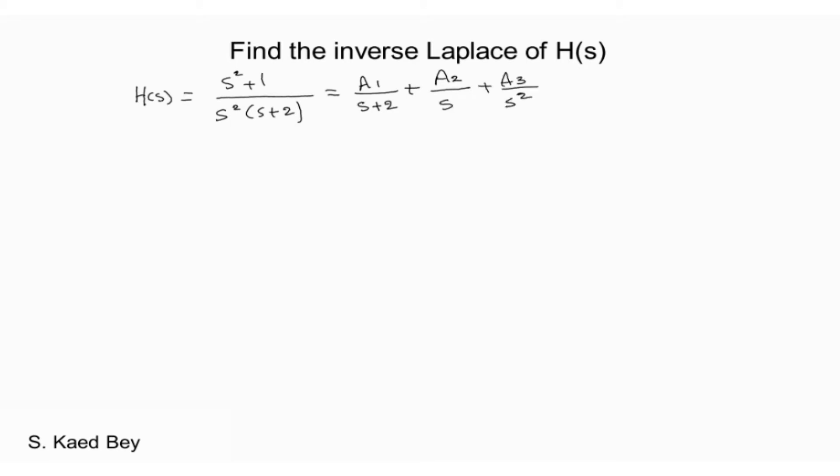You will notice that a1 and a3 can be found using the cover-up method. Coefficient a1 can be found by multiplying h of s with s plus 2 and setting s equals to minus 2. Similarly the coefficient a3 can be found by multiplying h of s with s squared and setting s equals to 0.